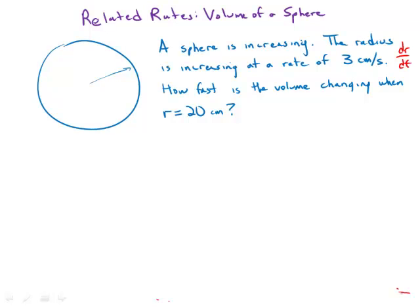So the two quantities we want to relate - we're asked for dv/dt and we know dr/dt. Those are the rates we want to relate.